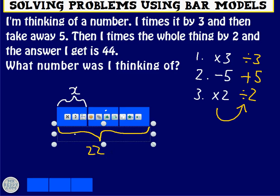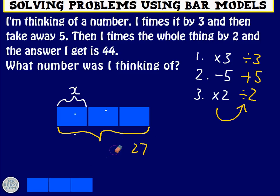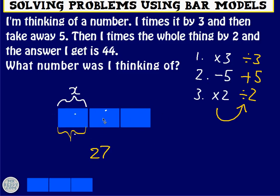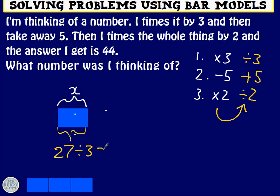And the final step is to divide by 3. So dividing by 3 will give me just that part there. And I will lose those two. And this is 27 divided by 3, which is 9. So x equals 9.